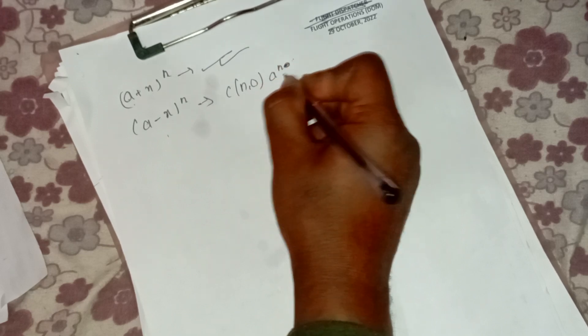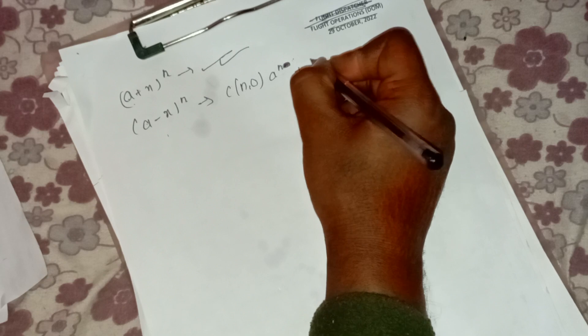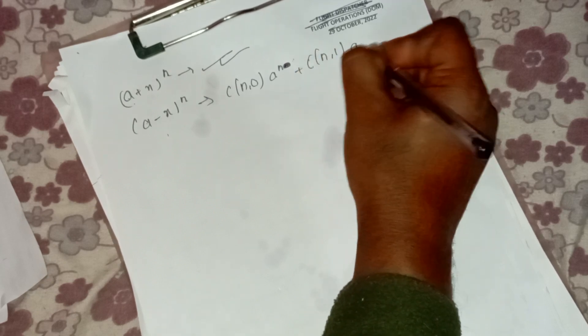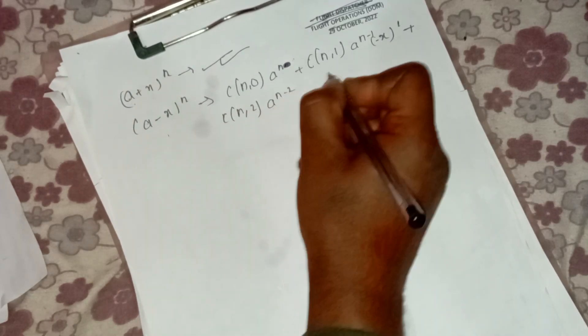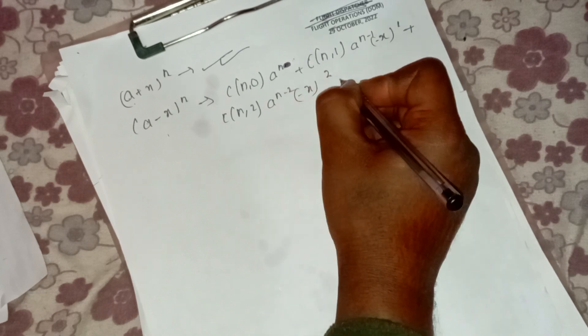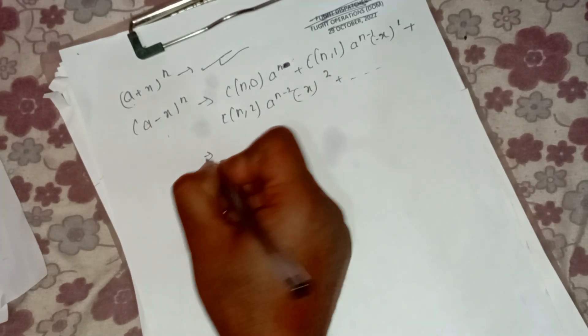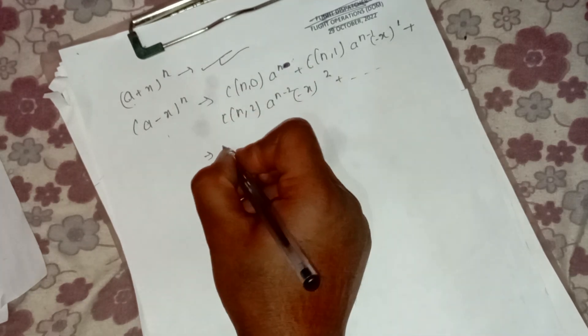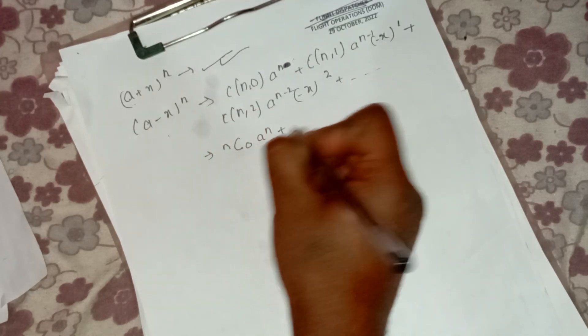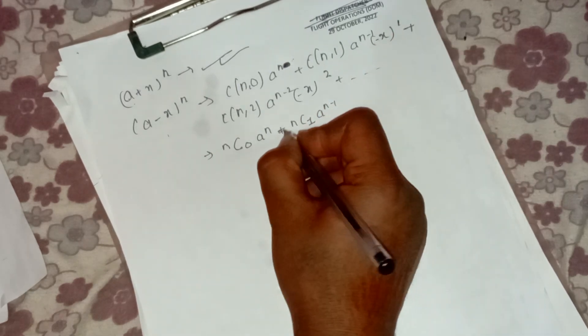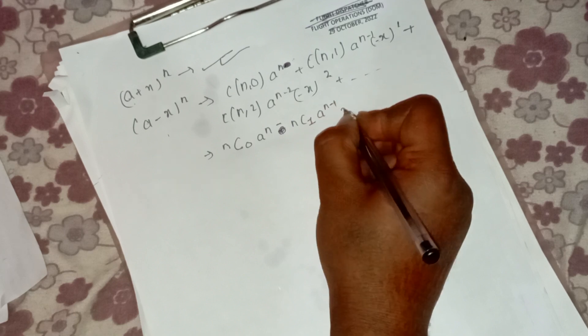When expanding (a - x)^n, the terms alternate in sign: C(n,0) times a to the power n minus 0 times x to power 0, plus C(n,1) times a to the power (n minus 1) times (-x) to the power 1, plus C(n,2) times a to the power (n minus 2) times (-x) to the power 2.